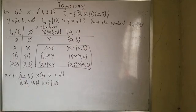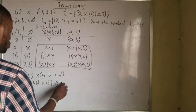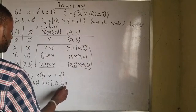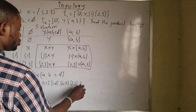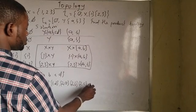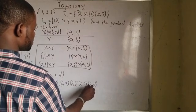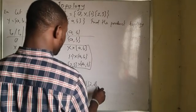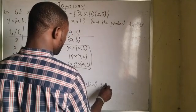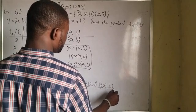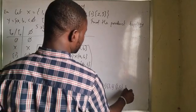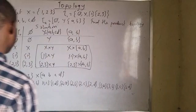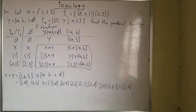Moving on to 2, I get: 2a, 2b, 2c, and 2d. Moving on to 3, I get: 3a, 3b, 3c, and 3d. I'm done with that area.